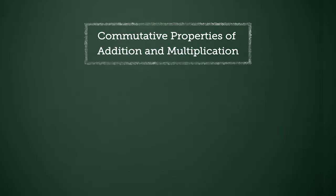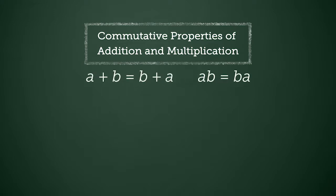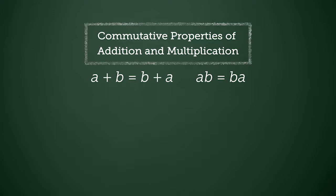The commutative properties of addition and multiplication state that the order of the addends or the order of factors can be changed without altering the value of the expression. In short, the order will not affect the solution.